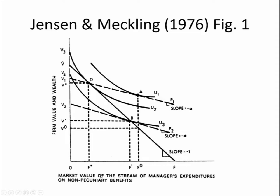So far, we have assumed this is a one-owner firm where the owner owns 100%, and therefore bears 100% of the cost of their consumption of non-pecuniary benefits — so there is no agency problem yet. However, what if the owner-investor decided they wanted to sell a portion of the firm to outsiders? Let's say they wanted to sell 1 minus alpha, where alpha is somewhere between 0 and 1, keeping alpha for themselves. For the sake of our experiment, let's say alpha is 0.7.